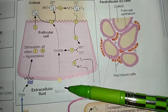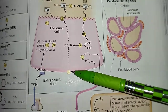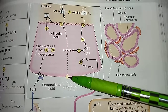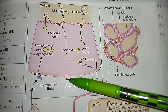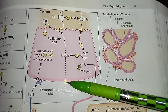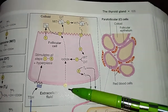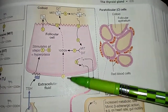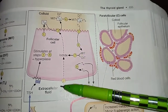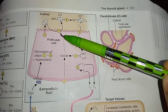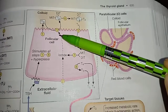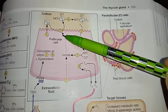The second step is also called trapping, because here the iodide (I⁻) is actively transported into the follicular cell from the extracellular fluid. This active transport of iodide into the follicular cell is called trapping.